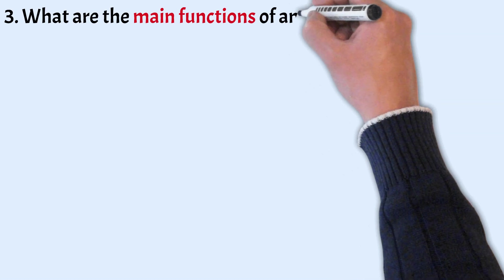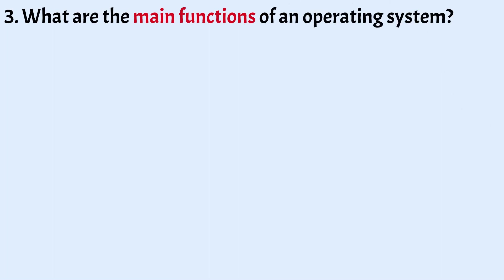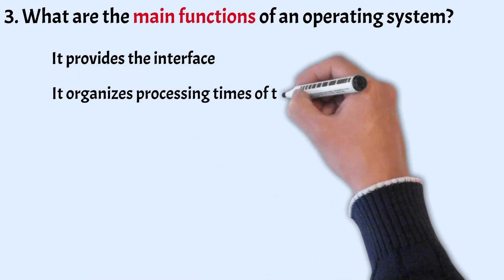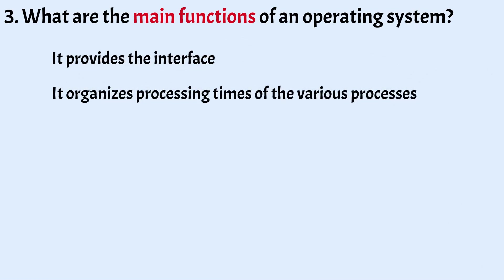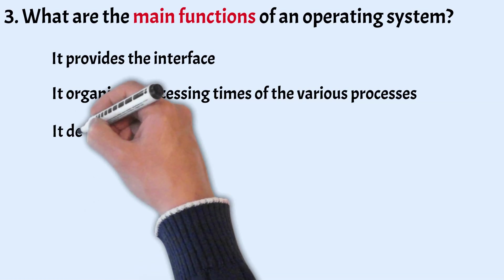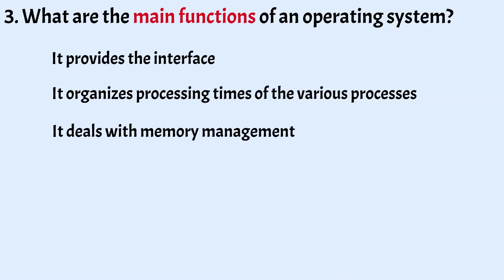What are the main functions of an operating system? It provides the interface for the user to interact with computer components, where the user gives commands to the OS and the OS instructs the hardware to execute those commands. It organizes and coordinates the processing time of various processes running simultaneously. It deals with memory management, allocating and deallocating memory space to programs in need.